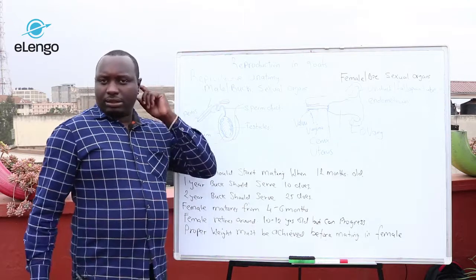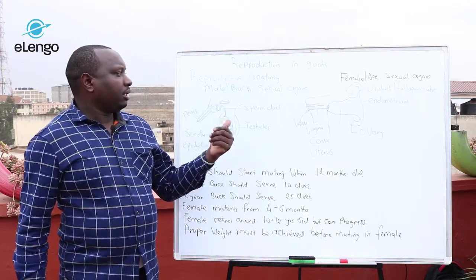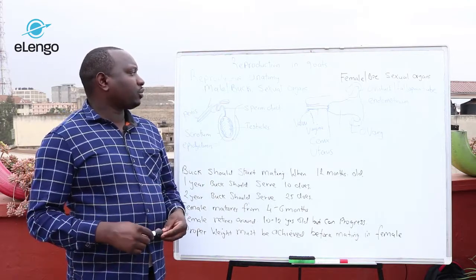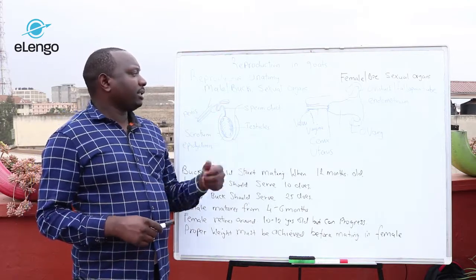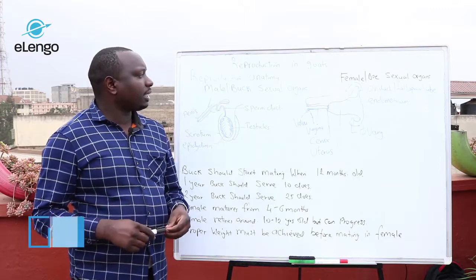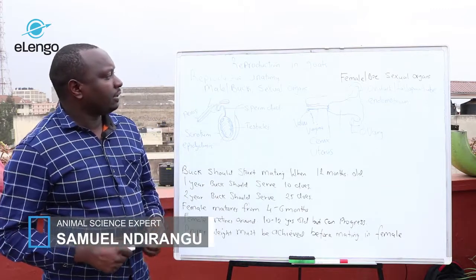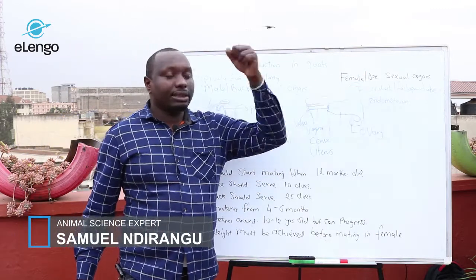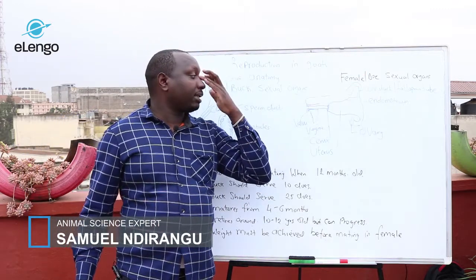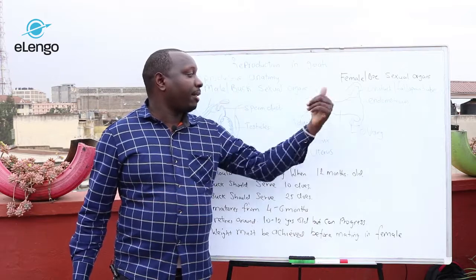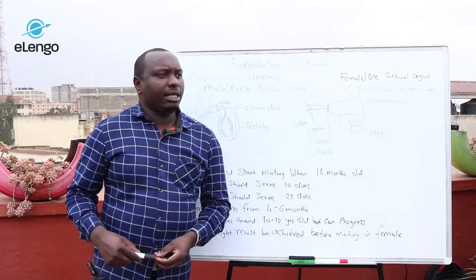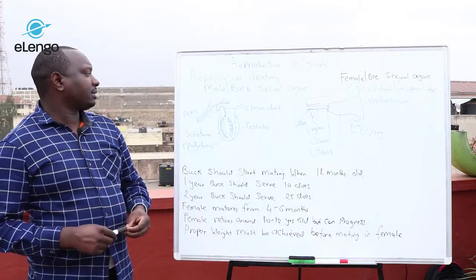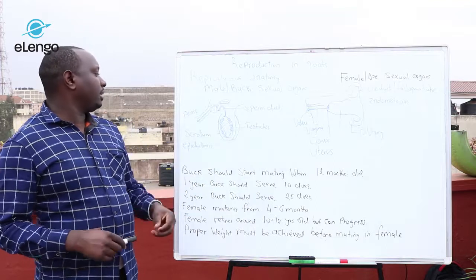Let's look at the reproductive organs first. We are going to look at the buck's sexual organ — that's the male sexual organ. Then we are going to look at the female sexual organs, and we are going to look at the major organs within.